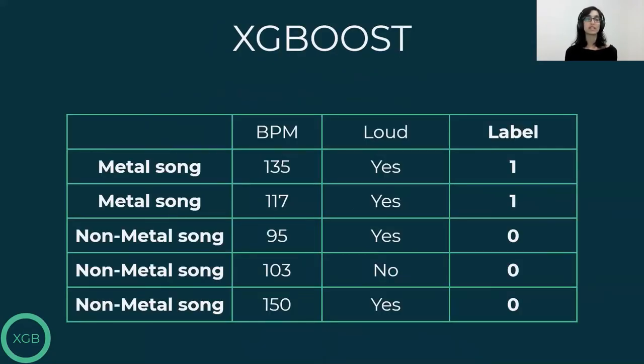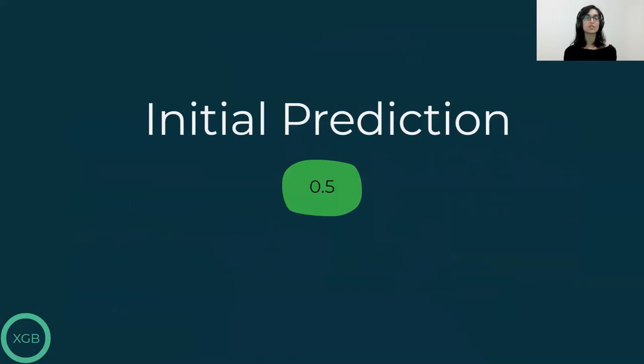If we're doing a binary classification, trying to predict if a song is metal or not, the values of the labels are 1 for metal songs and 0 for non-metal songs. Of course, we have more features and more songs than what we see in this table. XGBoost starts by giving one initial prediction for all of the samples, the same prediction, and its default value is 0.5. So the default prediction is that there is a 50% chance that the song is a metal song.